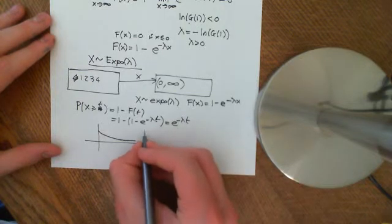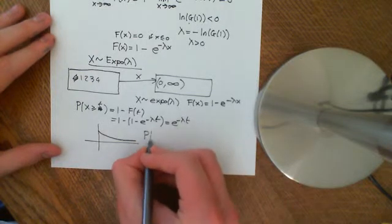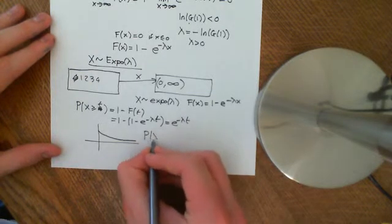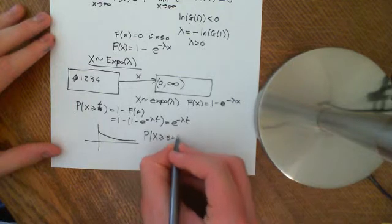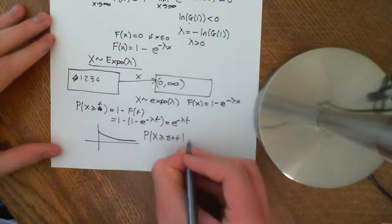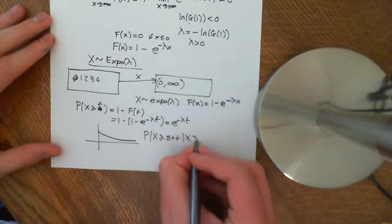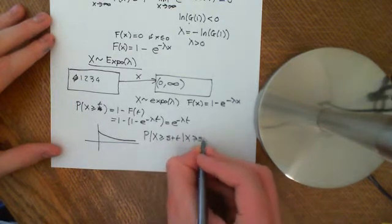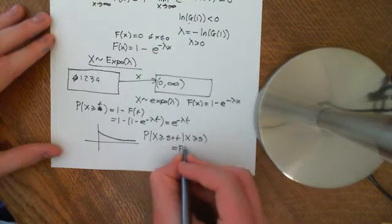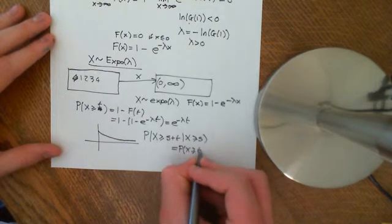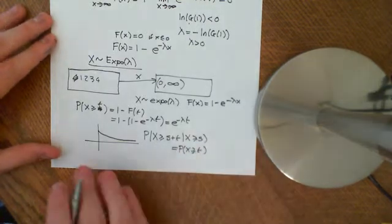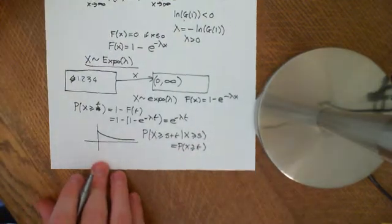The memoryless property of the exponential distribution says that the probability that X is greater than or equal to s plus t, given that X is greater than or equal to s, is actually equal to the probability that X is greater than or equal to t. Let's analyse what this means in terms of this problem.